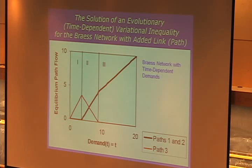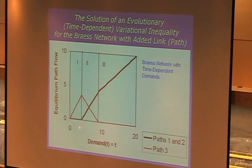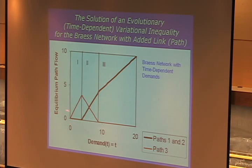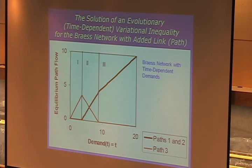In the original Braess Paradox, we had demand equal to six. In this regime, path three is always used. In fact, all of the paths are used, and if you add the new link giving you a new path, you have Braess Paradox occurring - the total cost increases for everyone in the network. If you have low levels of demand, those original two paths aren't used at all - just the new path is used. If we don't have much demand, the new path will be used but those two original ones won't be.